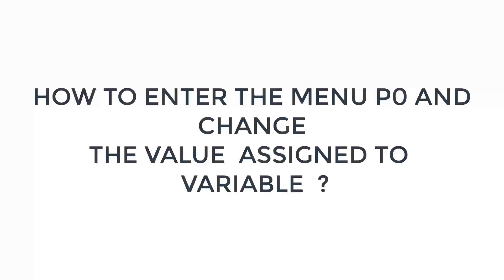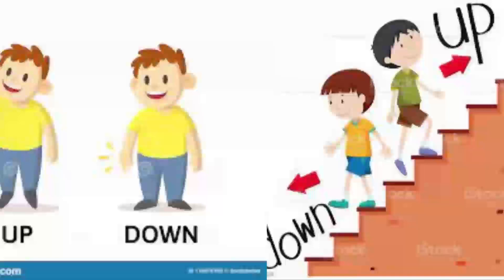To access menu P2: click on button one — the thermostat screen displays menu P0. Quickly click on button one again, which validates the entry into the menu, and the value assigned to P0 starts flashing. You can then use button two to increase the displayed value or button three to decrease it. Remember that button two and button three allow you to increase or decrease the value only when you are inside the menu.